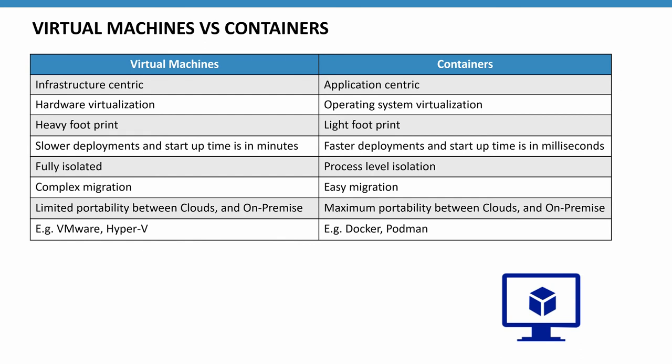In tabular format: virtual machines are infrastructure-centric, while containers are application-centric. A development team has full control over containers. For example, if you want a VM, you have to open a ticket to the infrastructure team, wait to be provisioned, and any changes require going through the full process again. With containers, a developer can do everything on their own — they don't need approval from the infrastructure team to get and operate the necessary operating system libraries.